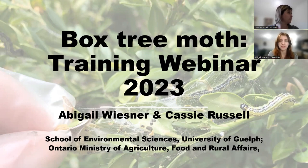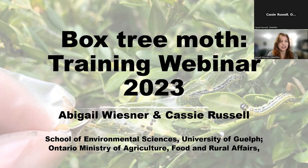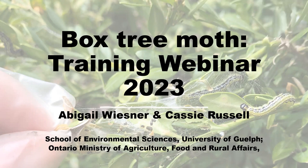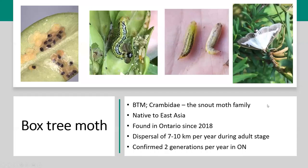Thank you for that introduction, I'm really happy to be here to talk about this today. So, Box Tree Moth, or BTM for short, is a species within the Crambidae family, which is otherwise known as the snout moth family. This is the same family as the European corn borer, which is another agricultural pest. BTM is native to East Asia, but was first confirmed here in Ontario in 2018.